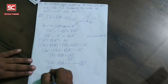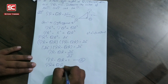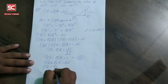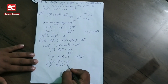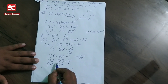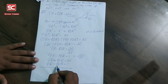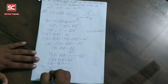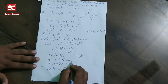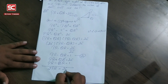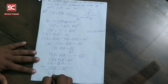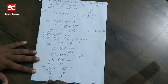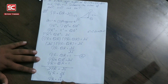Adding the two equations: PR plus QR plus PR minus QR equals 25 plus 1. The QR and minus QR cancel. So 2PR equals 26, giving PR equal to 26 upon 2, therefore PR is equal to 13 cm.